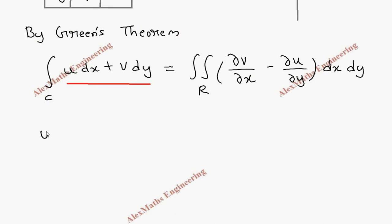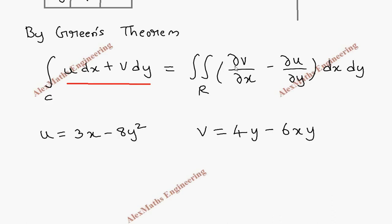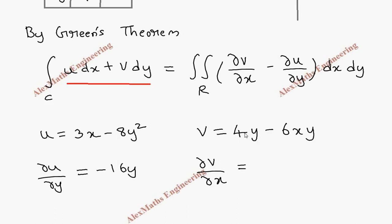We have u equal to 3x minus 8y squared, and v equal to 4y minus 6xy. For evaluating the right-hand side of Green's theorem, we need ∂v/∂x and ∂u/∂y. So ∂u/∂y, where x is constant, gives 0 minus 16y, which is minus 16y. And ∂v/∂x, where y is constant, the first term is fully constant, so we get minus 6y.